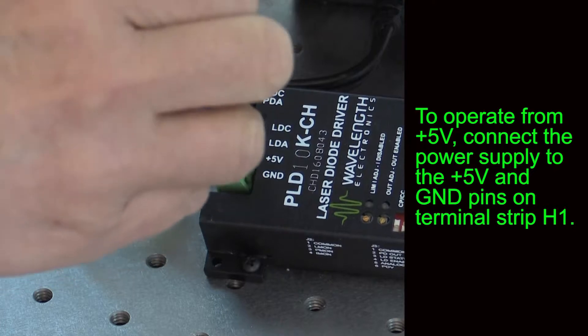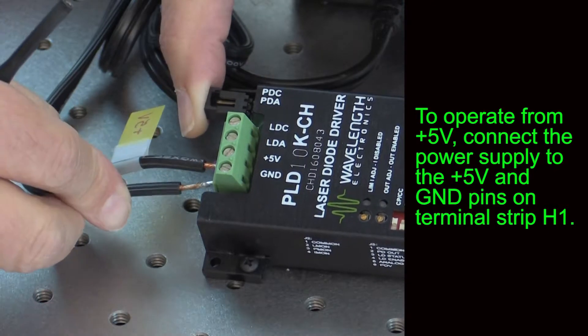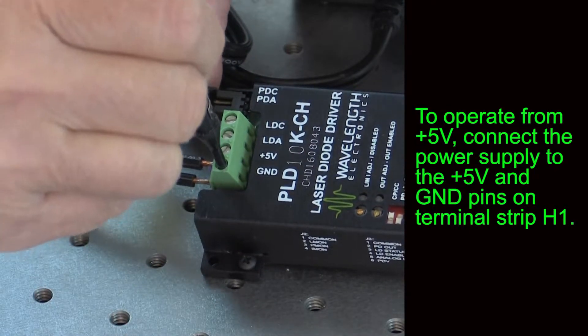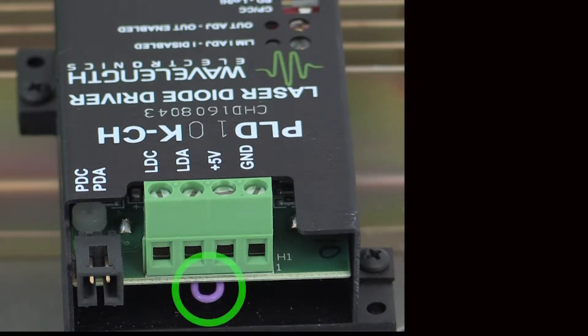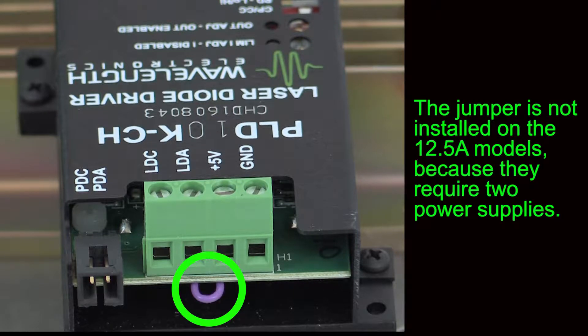To operate from plus 5 volts, connect the power supply to the plus 5 volt and ground positions of terminal strip H1. A purple jumper is visible under the main circuit board that ties plus 5 volts to LD anode. This jumper is not installed on the 12.5 amp models because they require two supplies.